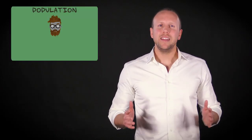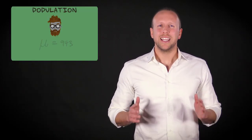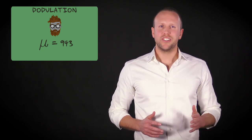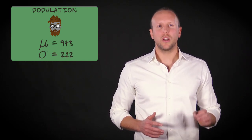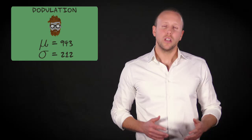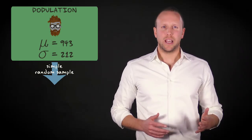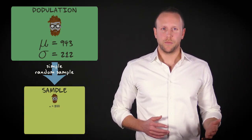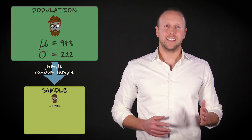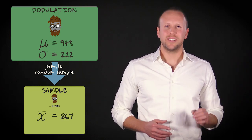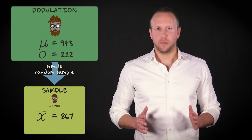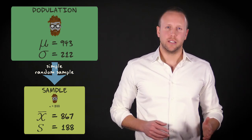Assume we know that in the entire population, the mean time hipsters have spent reading the book is 943 minutes. You also know that the population standard deviation equals 212 minutes. You have drawn a simple random sample of 200 respondents from this population. The mean reading time in this sample equals 867 minutes, and the standard deviation in the sample is 188 minutes.